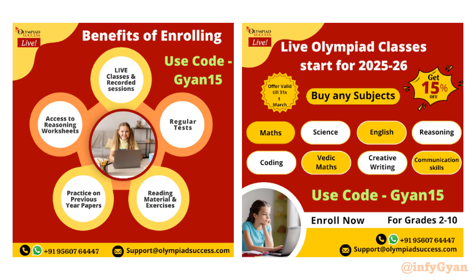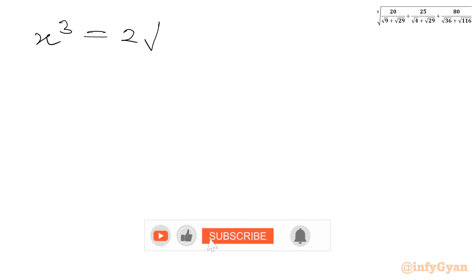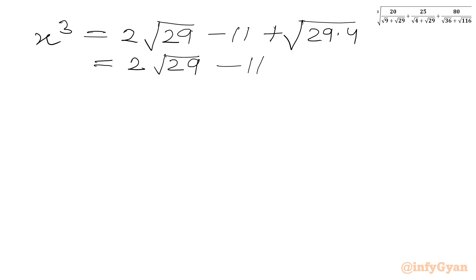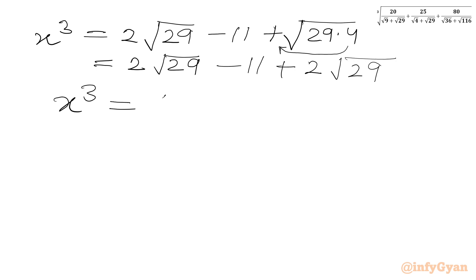Now let us come back to our problem. x³ was 4√29 − 11. We can write √116 as √(29×4), which equals 2√29. So ultimately x³ = 4√29 − 11.